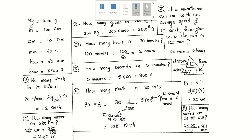I will start with a few of the very known units that we need to know. One of them is how to convert from kilogram to gram: one kilogram equals 1000 grams, one meter equals 100 centimeters, and one centimeter equals 10 millimeters.